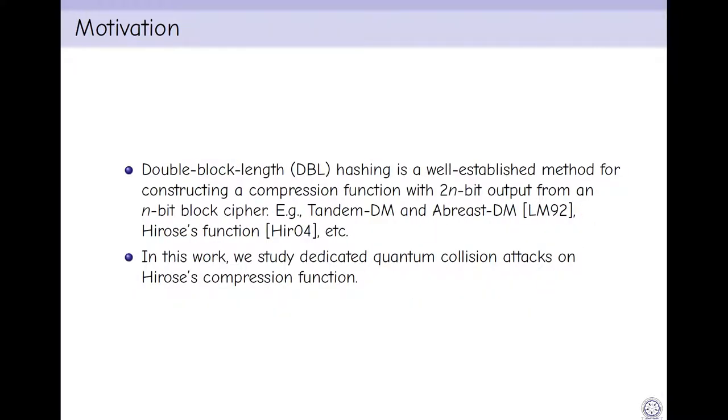Further, double block length hashing is a well-established method for constructing a compression function with 2n-bit output from n-bit block cipher. For example, Tandem-DM, Abreast-DM, Hirose compression function, etc. In this work, we study dedicated quantum collision attacks on Hirose's compression function.